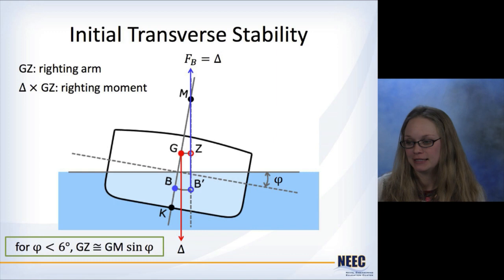Going back to initial transverse stability, we're looking at GZ and then the weight of the ship times GZ, which is the righting moment. If the righting moment is positive, that means that the ship will right itself if it's tipped over a small bit. For small angles like less than six degrees, you can estimate GZ by GM times the sine of the heel angle. So if we can figure out GM, then we can figure out what the initial stability of our ship is, which is a good thing.